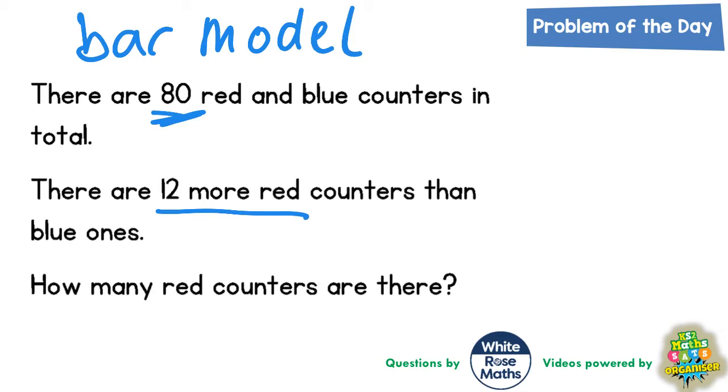So there are 12 more red counters than blue. Another way of saying that is that the red counters is actually the same number as the blue counters but with an extra 12 added onto it. So the red counters is blue plus an extra 12.